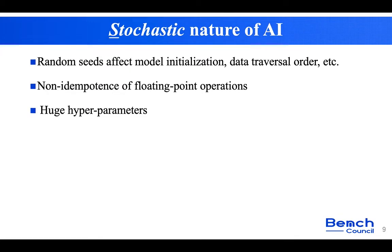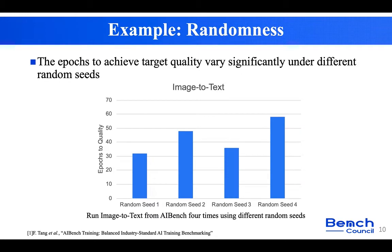The last challenge is the stochastic nature of AI. AI algorithms have huge parameter spaces, and different settings may largely affect performance. Moreover, different runs of the same AI algorithm may vary largely, due to random states or characteristics of floating-point operations. For example, we conducted an experiment using different random states for image-to-text workloads from AI bench, evaluating the number of epochs to achieve the targeted quality, and found that results vary significantly across runs.